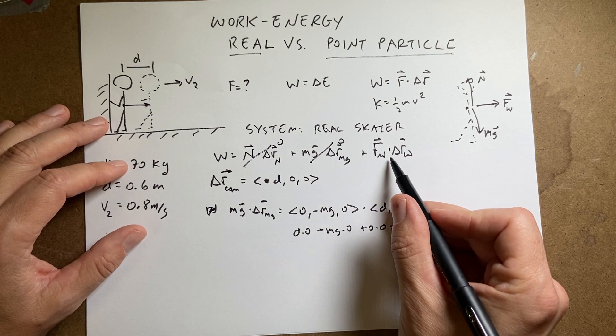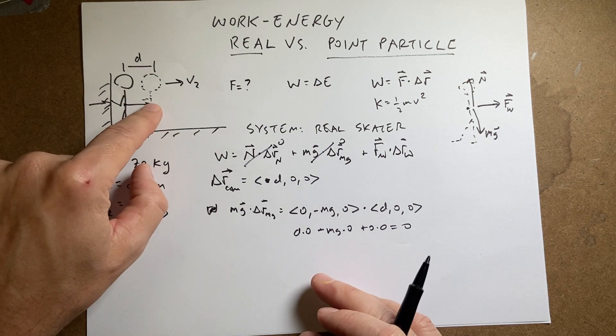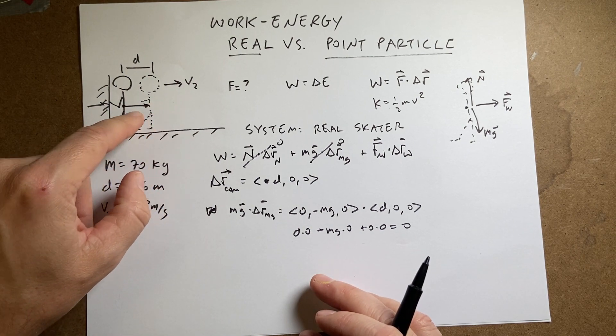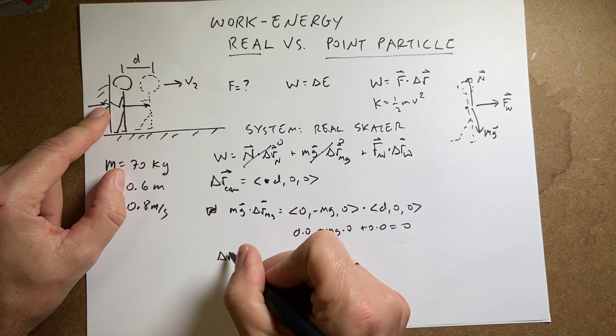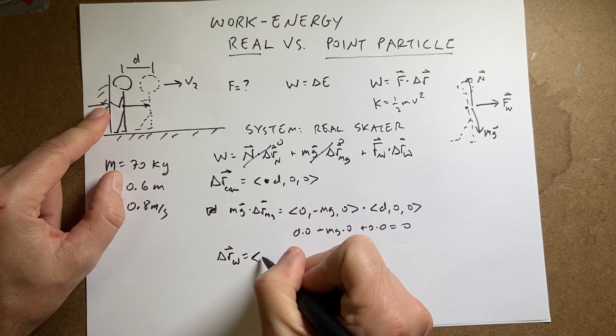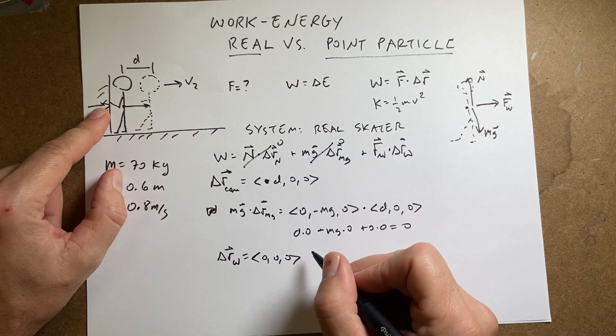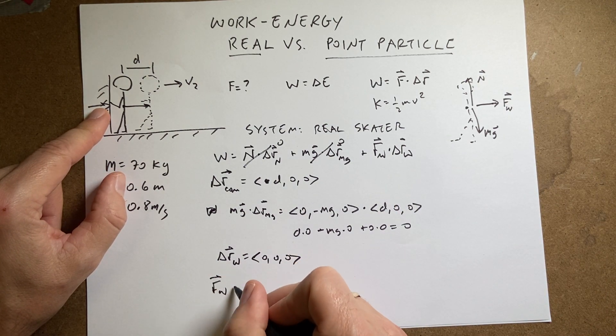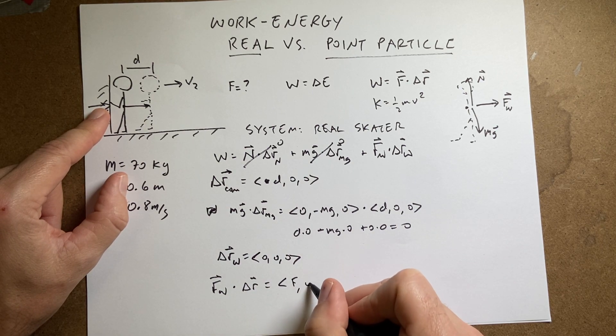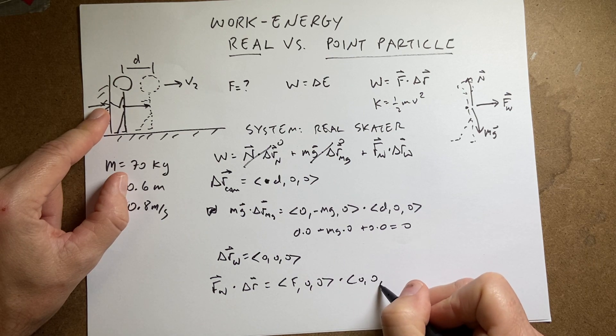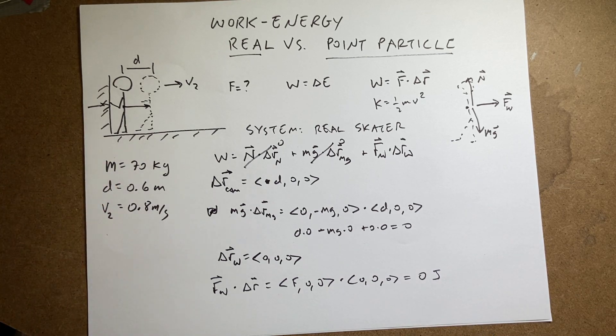But what about that? So now this is a little bit different because the force from the wall is right here and the person moves over there. But the force doesn't change. The displacement of the force is zero. So delta R_wall equals zero, zero, zero. So if I take the force from the wall, I can say F_wall dot delta R is going to be the force from the wall, which is F, zero, zero dot zero, zero, zero equals surprisingly zero. Zero joules. So there's no work done on the system.